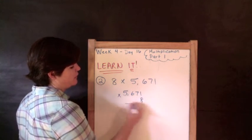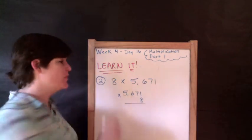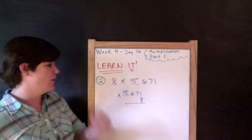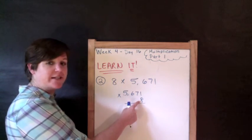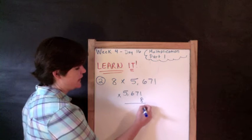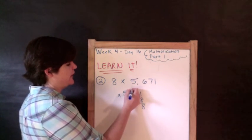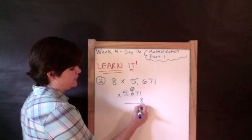So let's go. 8 times 1 is 8. 8 times 7 is 56, so 5 up on the next one, 6 down.